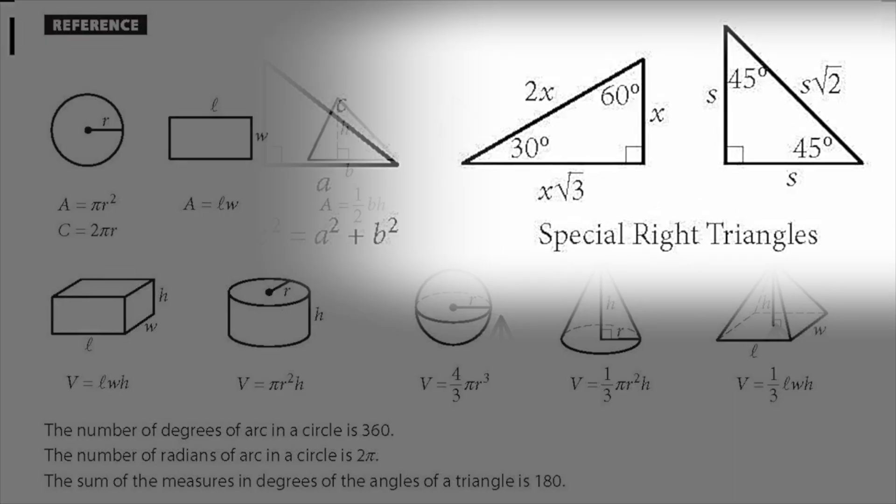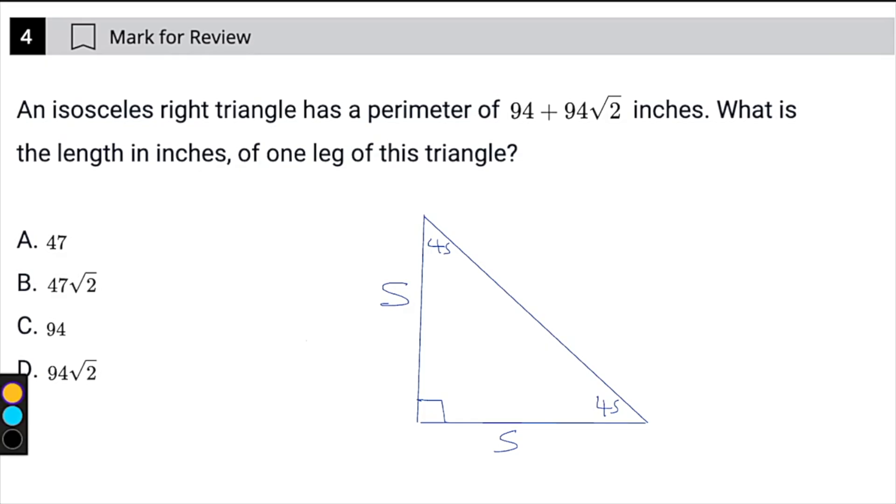This is on the reference sheet, so you don't have to memorize this, but I do recommend that you memorize it. And on that reference sheet, you will also see that the hypotenuse is going to be one of the sides times the square root of 2. And that's where this can get tricky, because if you see that square root of 2, you might automatically be thinking to yourself, oh, this is the rule. So if I have 94 plus 94 and square root of 2, then my sides have to be 94, right?